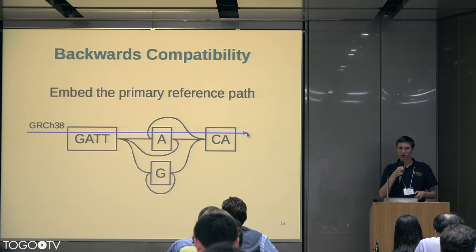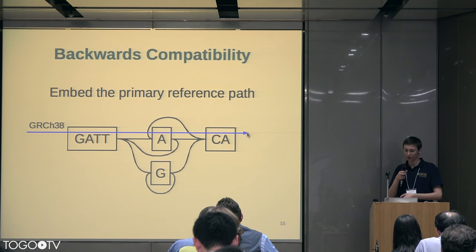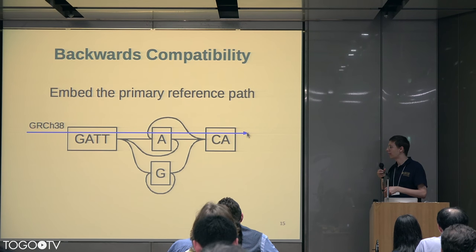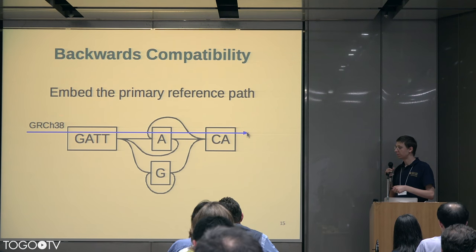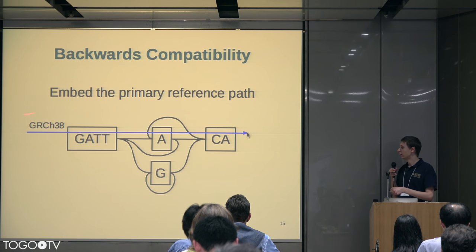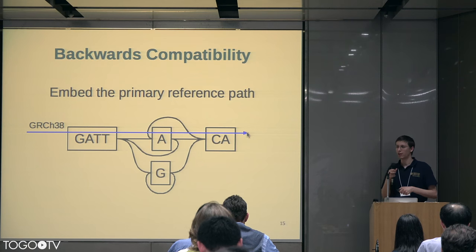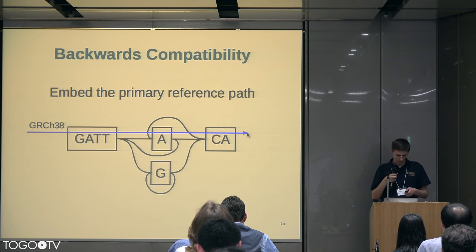The whole system is backwards compatible to the linear reference structure, because in this graph we can embed paths that describe the linear reference that people have been using so far, and say what nodes you have to visit in order to spell it out. And we can convert annotations back and forth using these paths.